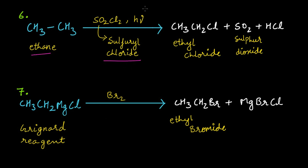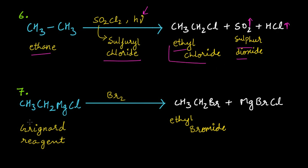The sixth method is when ethane is treated with sulfuryl chloride (SO₂Cl₂) in the presence of sunlight or UV rays, you get ethyl chloride, sulfur dioxide, and HCl. The SO₂ and HCl are gaseous, so they are removed on their own.